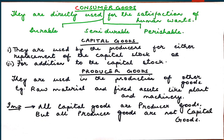The next classification is consumer goods versus capital goods. Consumer goods satisfy the wants of consumers directly; they are finally purchased by consumers for the satisfaction of their wants. Examples include bed, scooter, TV, etc. Consumer goods can be classified into three categories: durable, semi-durable, and perishable.